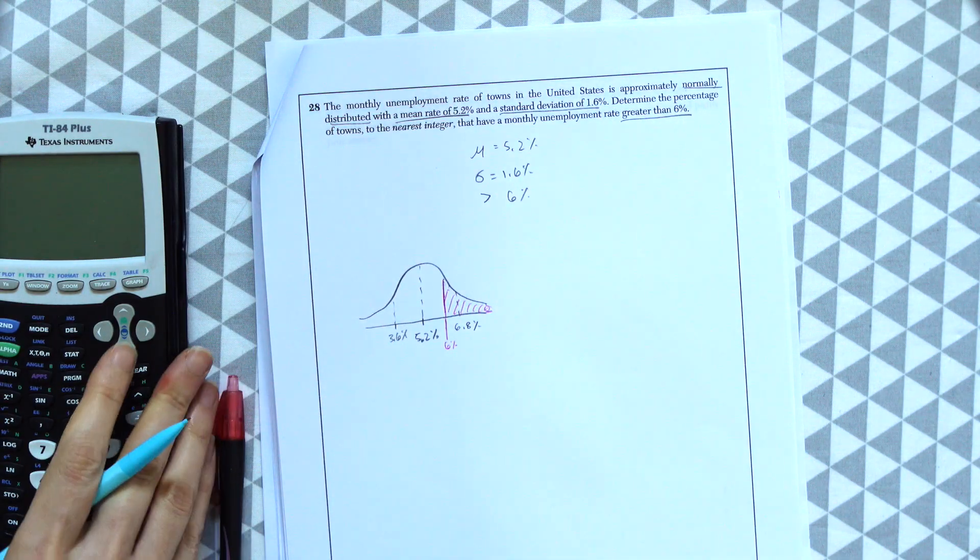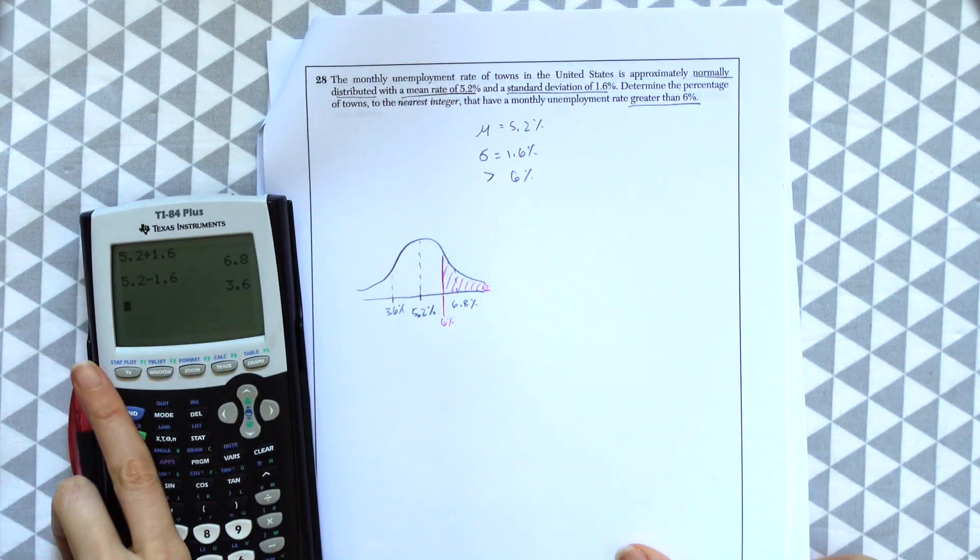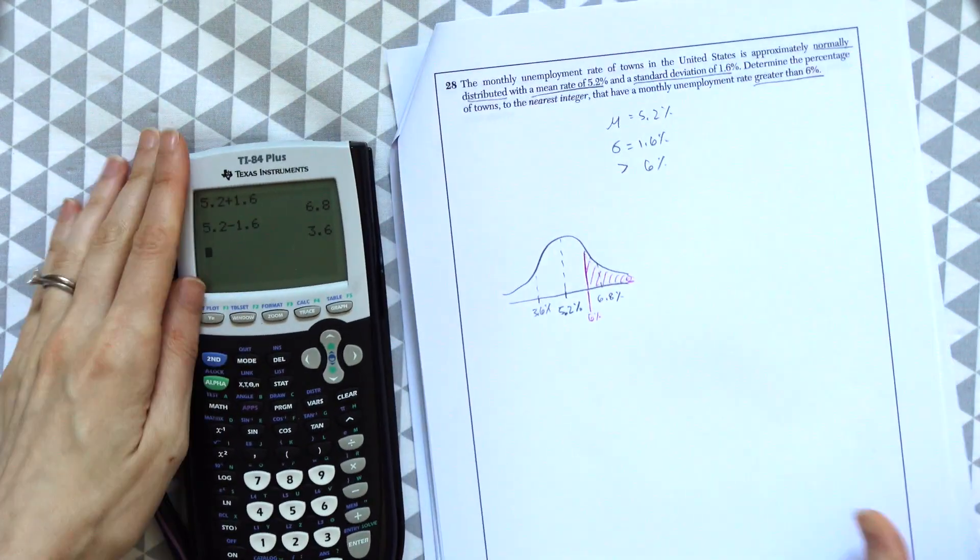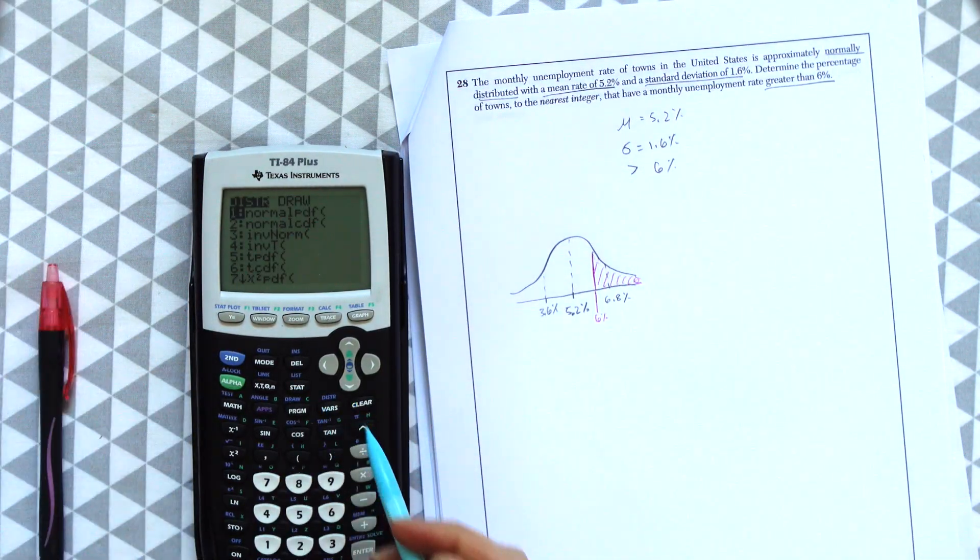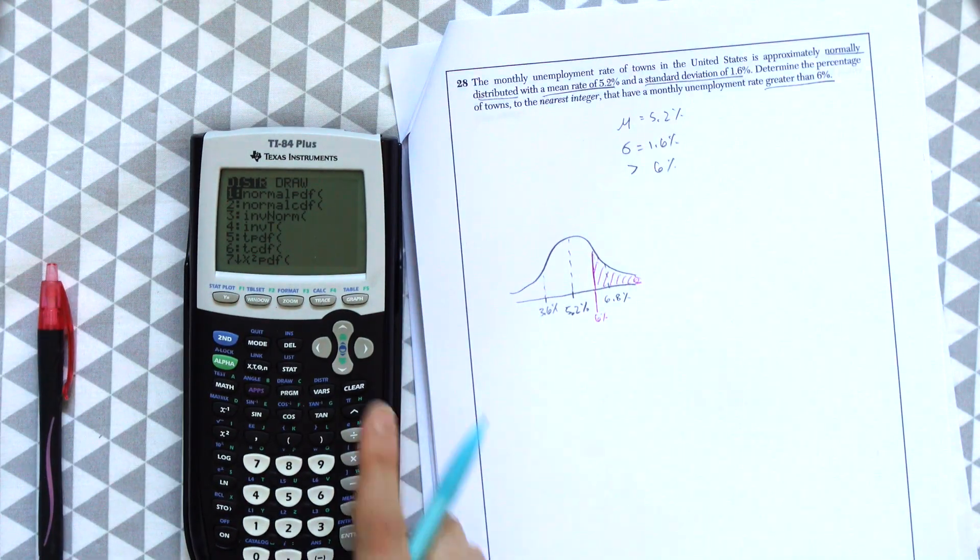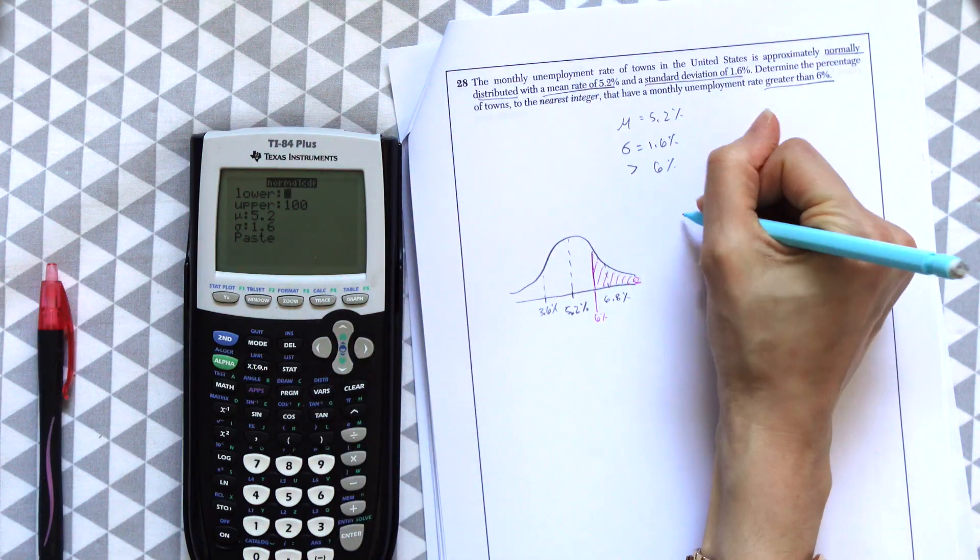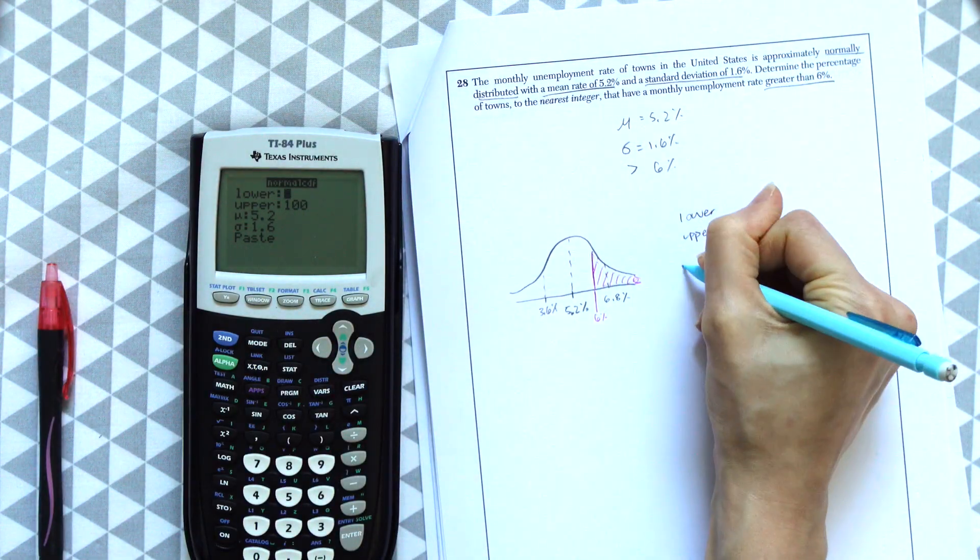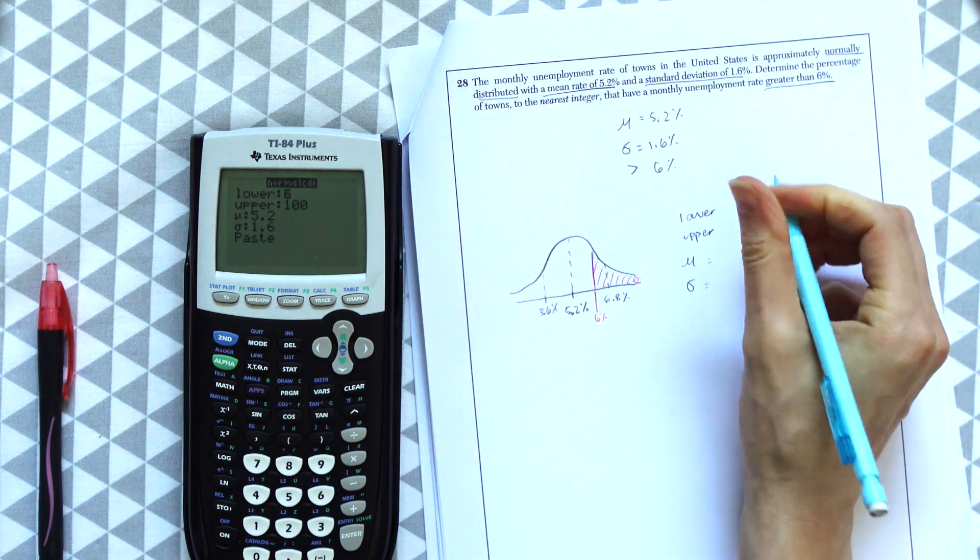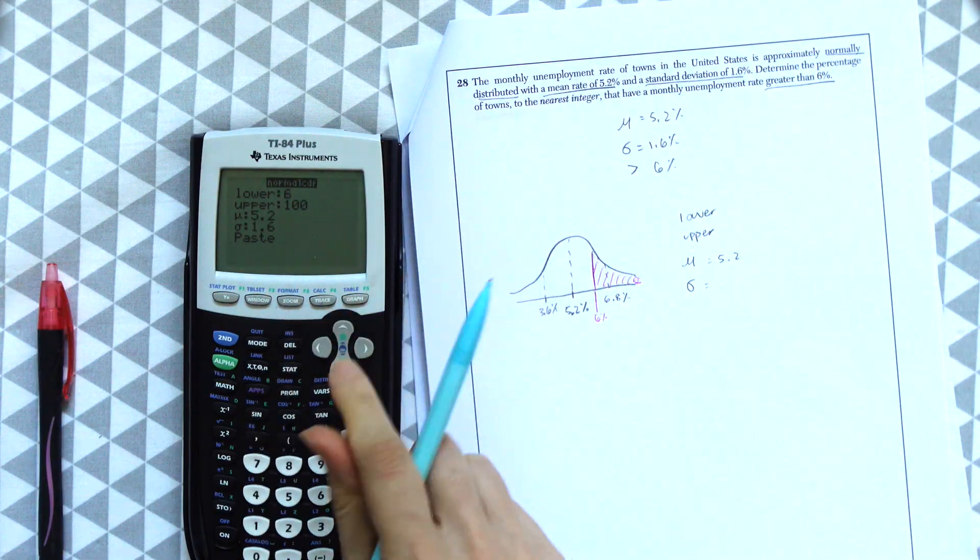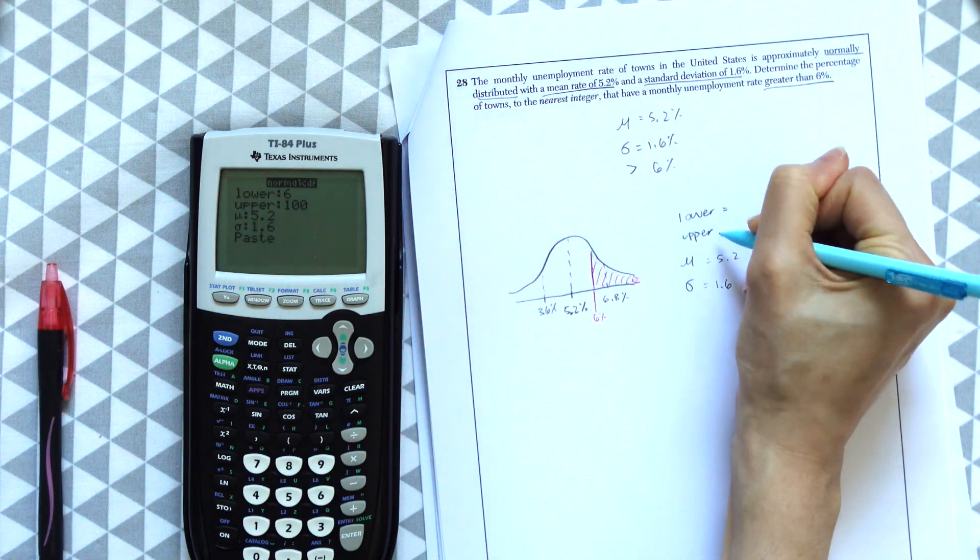So what we're going to do is use this information that they gave us. We're going to go to second vars, notice that says distribution. Second vars, normal CDF, which is choice number two. And then they have lower, upper, the mu, the standard deviation. Okay, so we know our mu is 5.2. Our standard deviation is 1.6.